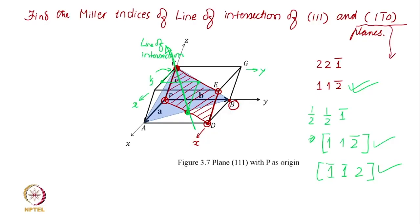1 1 2 bar or bar 1 bar 1 2 both are fine. But if I say electric current is flowing, then you have to decide whether it is flowing in 1 1 2 bar direction or bar 1 bar 1 2 direction. Depending on context, sometimes we may differentiate, sometimes we may think it is the same. Thank you very much.